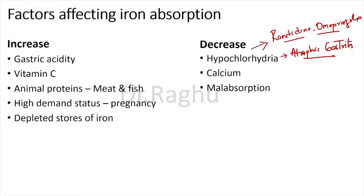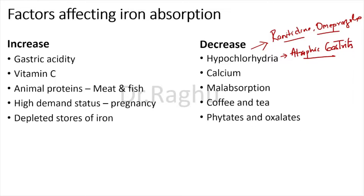Third factor is malabsorption — any disorder affecting the duodenal mucosa, such as tropical sprue, celiac sprue, duodenal ulcer, or duodenal cancer, will reduce iron absorption. Also, never advise a person to take iron tablets with coffee or tea; keep a gap of one to two hours, because coffee and tea contain polyphenols which reduce iron absorption. Anything containing phytates and oxalates also decreases iron absorption.